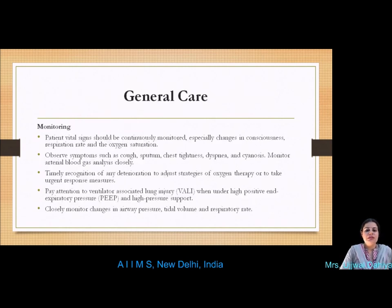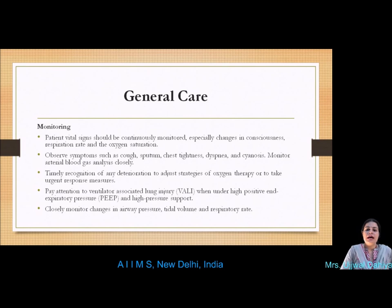General ICU care includes early monitoring of vital signs, especially changes in consciousness using the Glasgow Coma Scale, respiratory rate, and oxygen saturation. Observe symptoms like cough, sputum, chest tightness, dyspnea, and cyanosis, and analyze ABG for acidosis or alkalosis. Timely recognition of deterioration is needed to adjust oxygen therapy strategies. Monitor for ventilator-associated lung injury under high PEEP and high pressure support. Closely monitor changes in airway pressure, tidal volume, and respiratory rate.